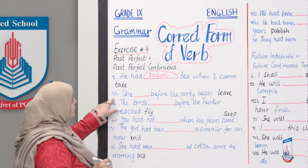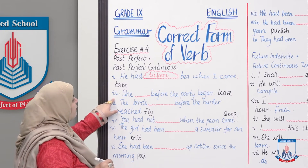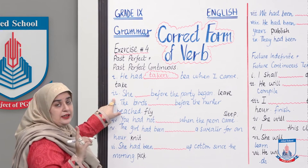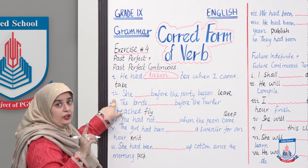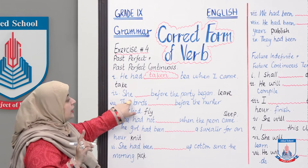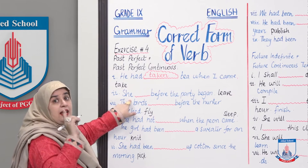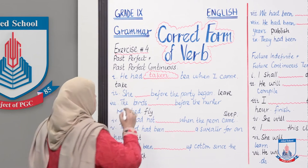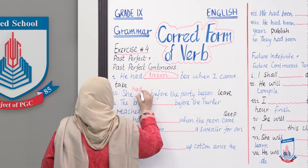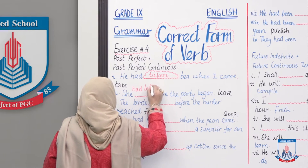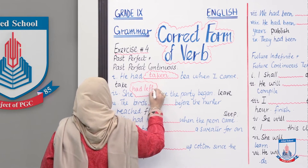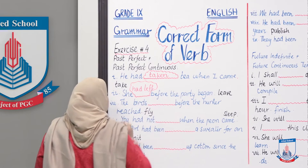'She ___ before the party began.' This is something that she had already done — not a continuous action. So: 'She had left before the party began.' 'Had' is not written in the blank but we have to add it.